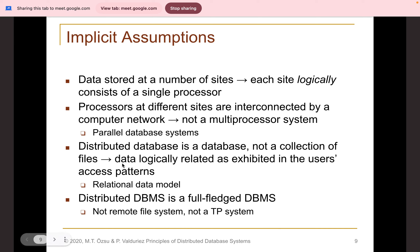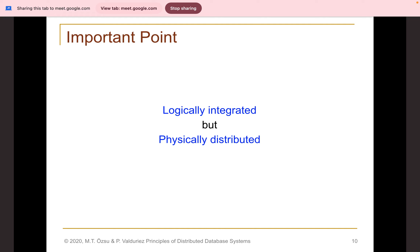A distributed database is a collection of databases — not a collection of files — where data is logically related. We define a distributed database management system as a full-fledged database management system, not a transaction processing system or remote file system, but one with multiple distributed, replicated, and network-interrelated computing components. That is how we define distributed database systems.